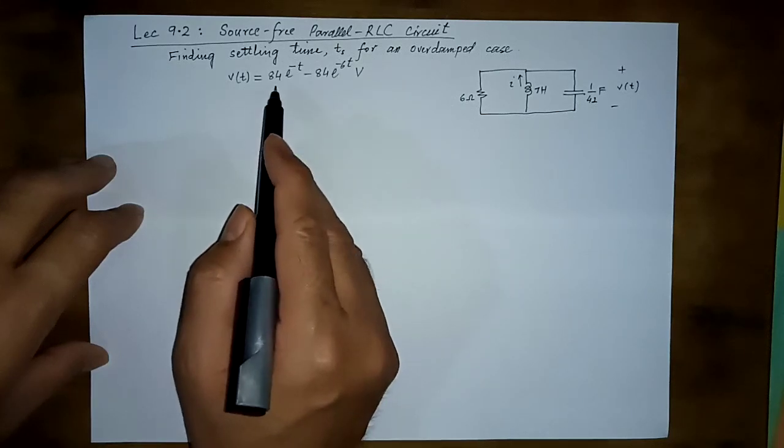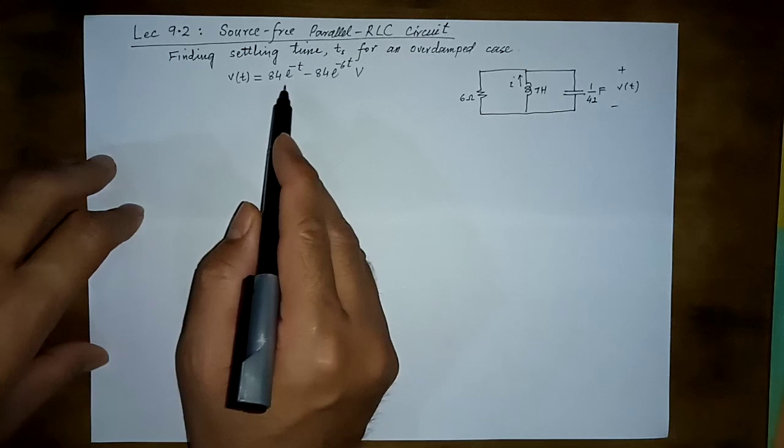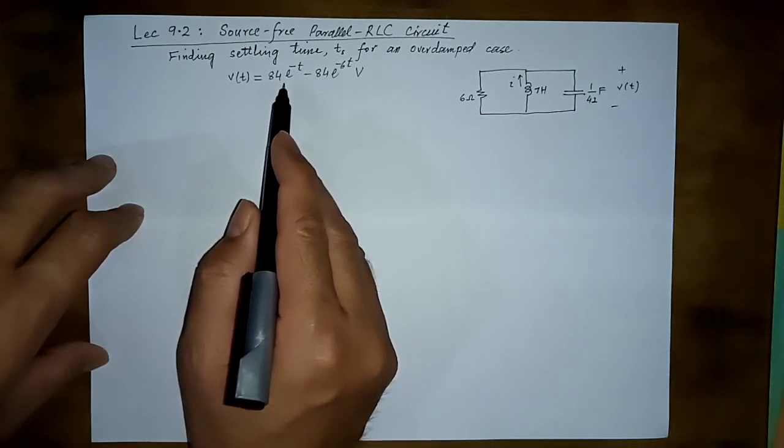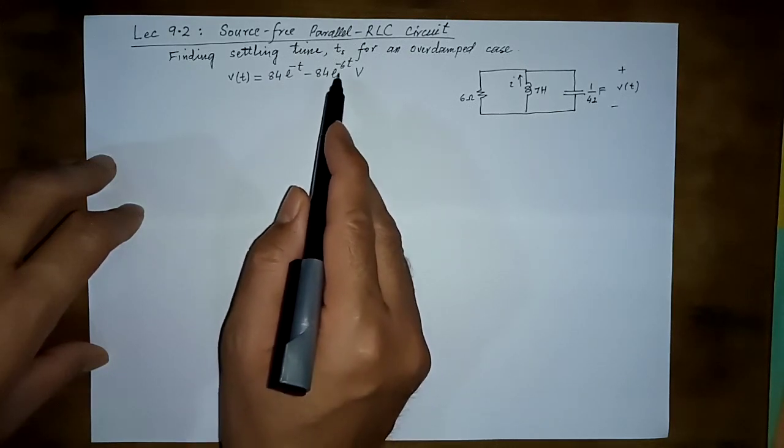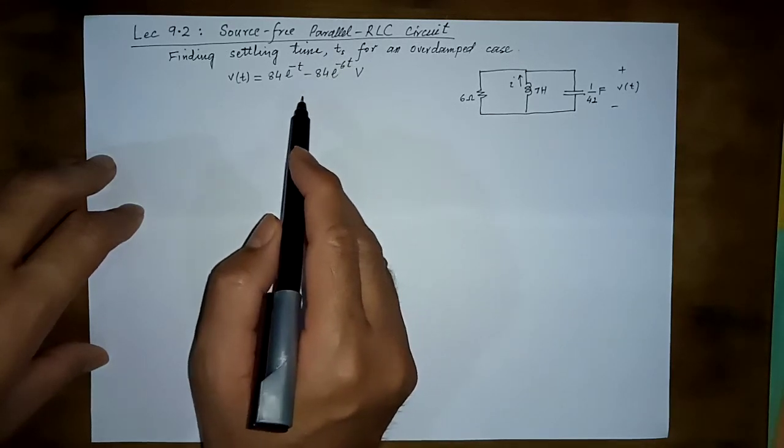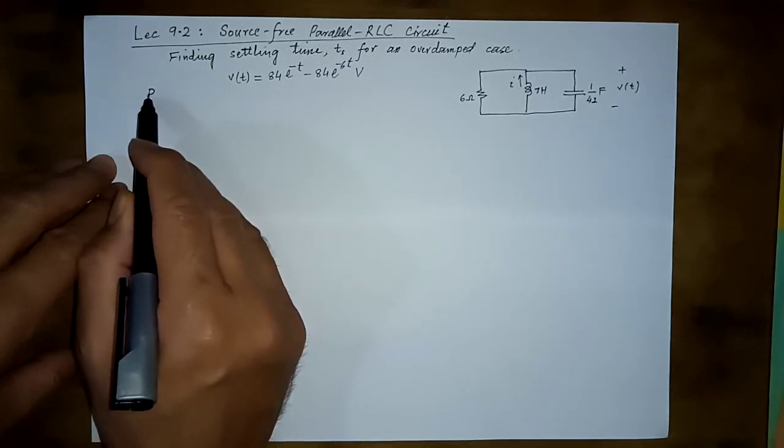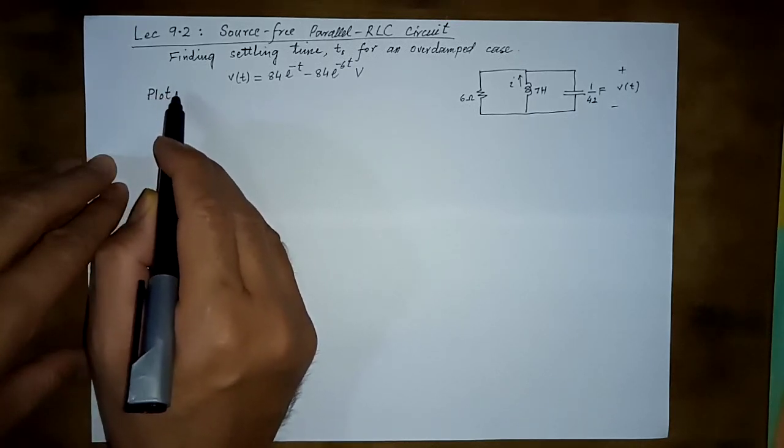This was the response where we see there are two exponentially decaying terms. This decays slower, this decays faster because of a larger coefficient with t. Let us try to first plot it.